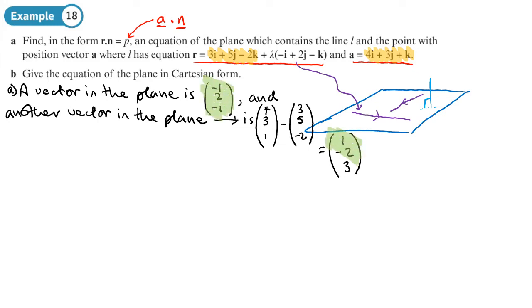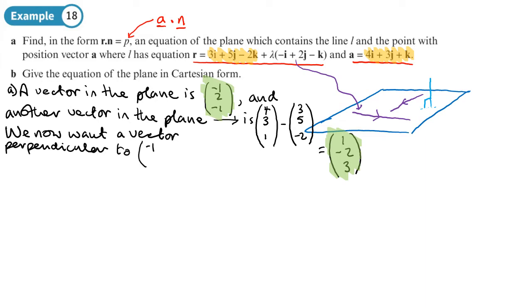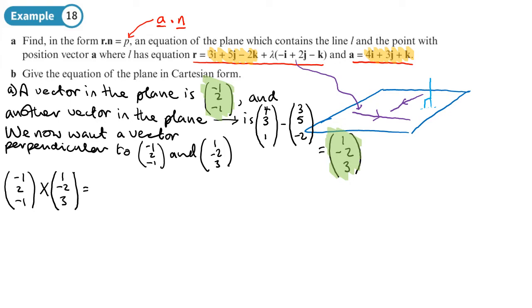These two vectors in the plane represent my two direction vectors. Now what I want is a vector which is perpendicular to both of those — that will be the normal, my N in the equation of the plane. We now want a vector perpendicular to negative 1, 2, negative 1, and 1, negative 2, 3. We can do that by doing a cross product of these two, using the determinant method.